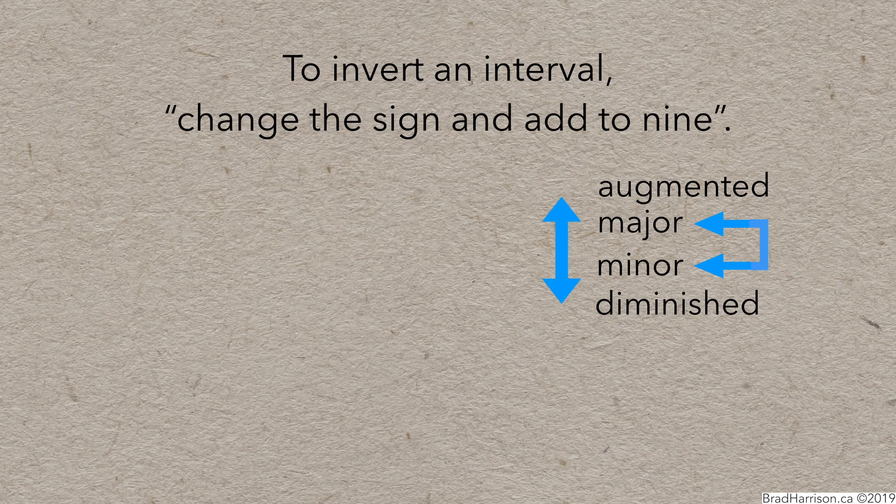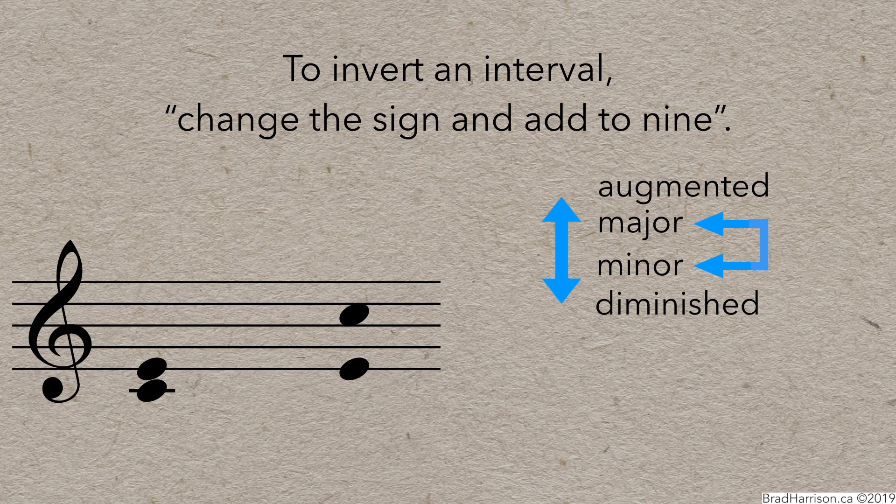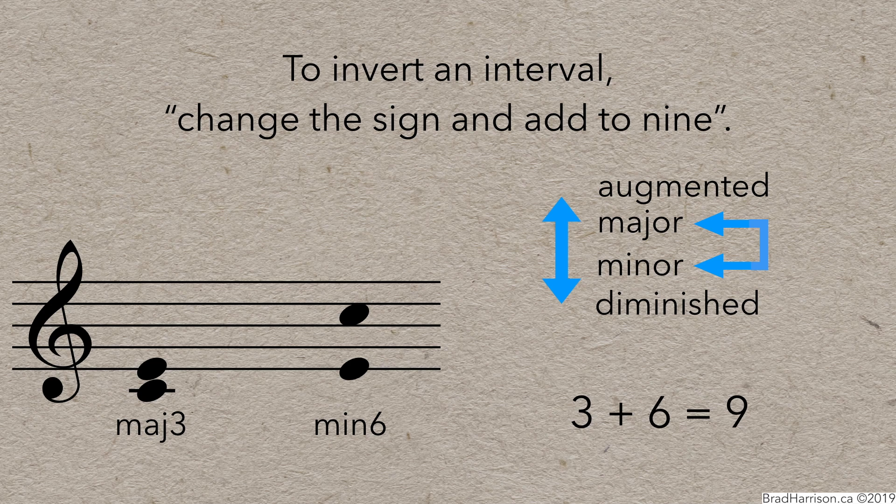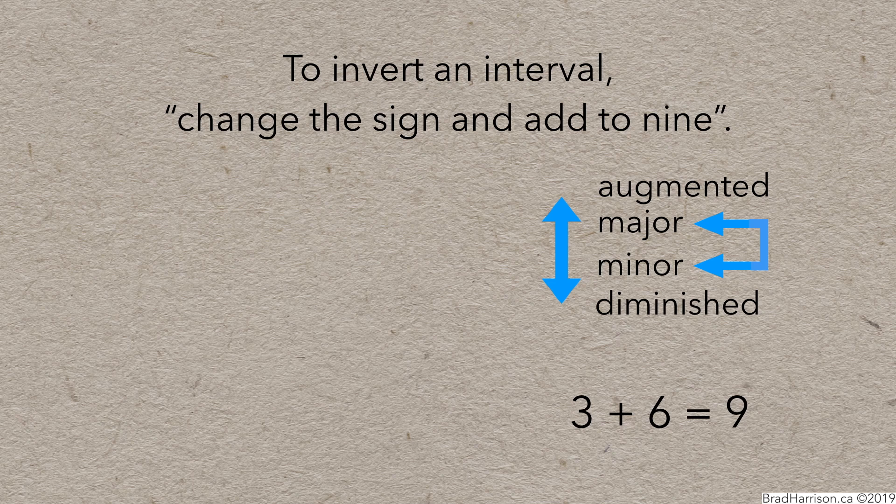Let's try another one. Like C to E, and its inversion E to C. C to E is a major 3rd. Now, simply change the sign from major to minor and add to 9, and we have a minor 6th. If you want to double check, just evaluate the interval as if it were E major, and you'll get the same answer. Let's try another.